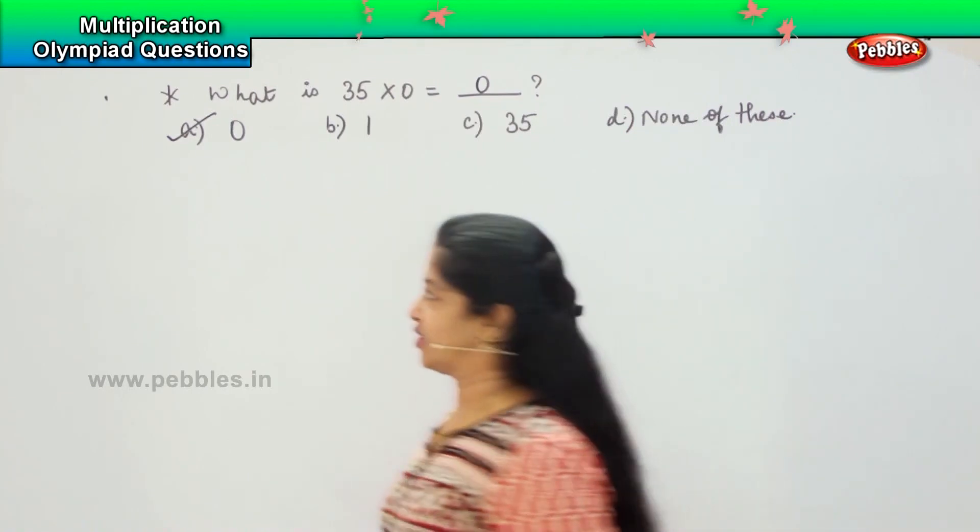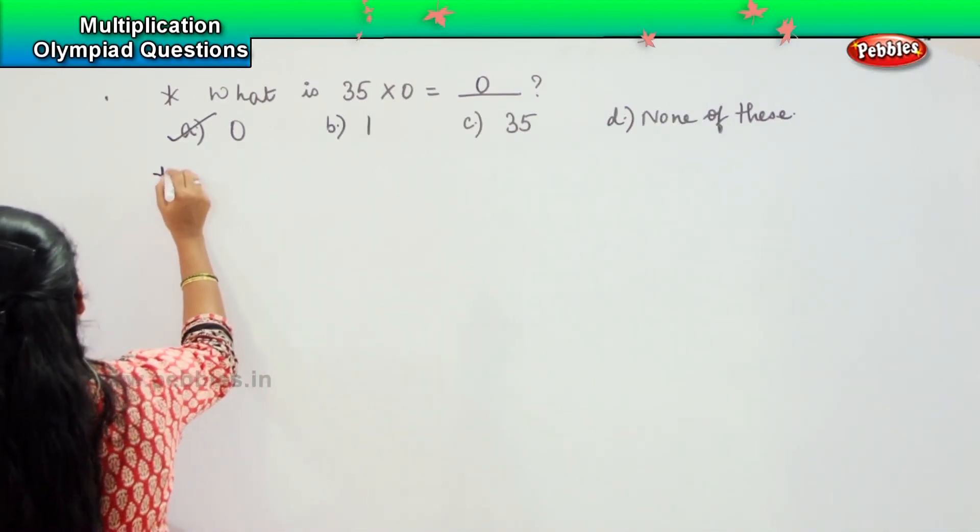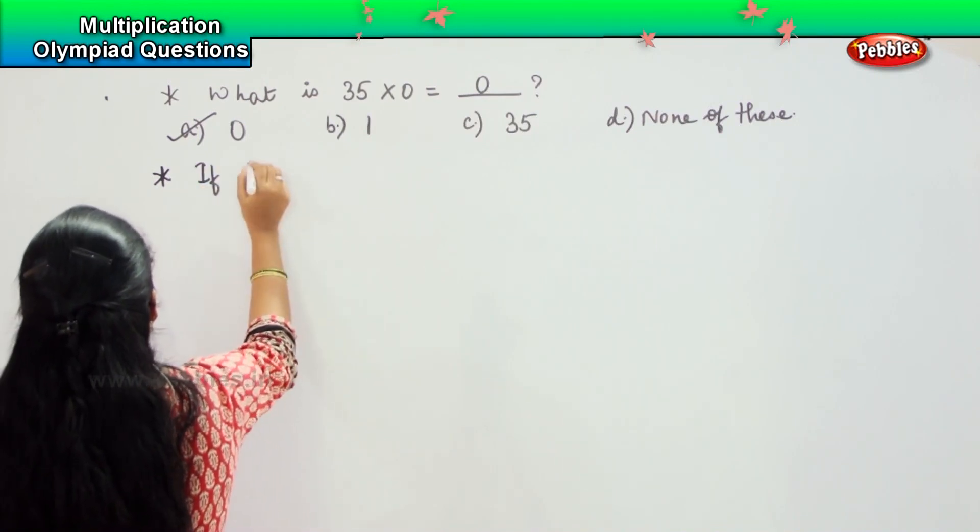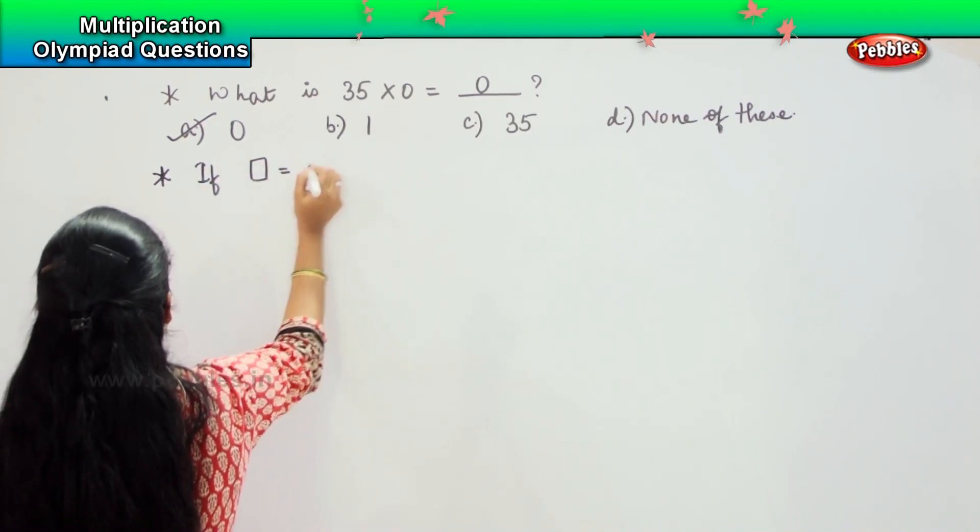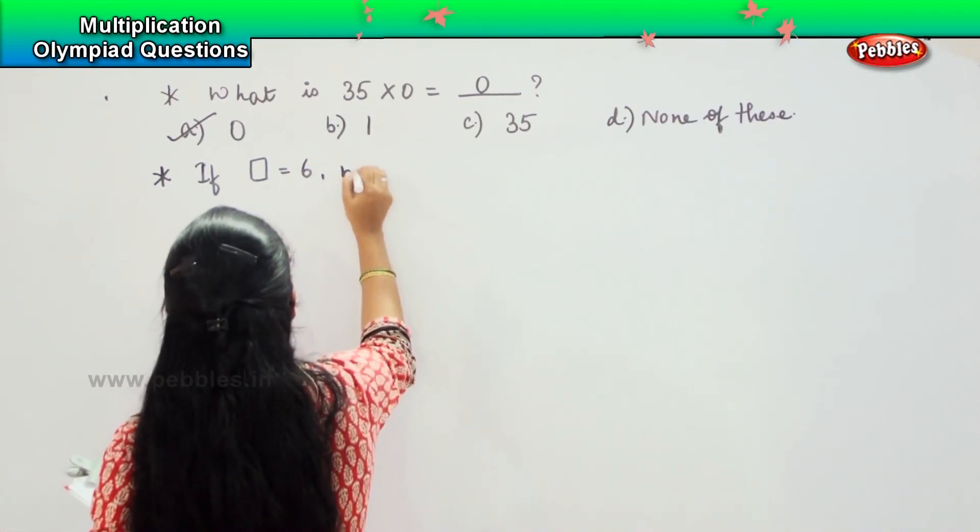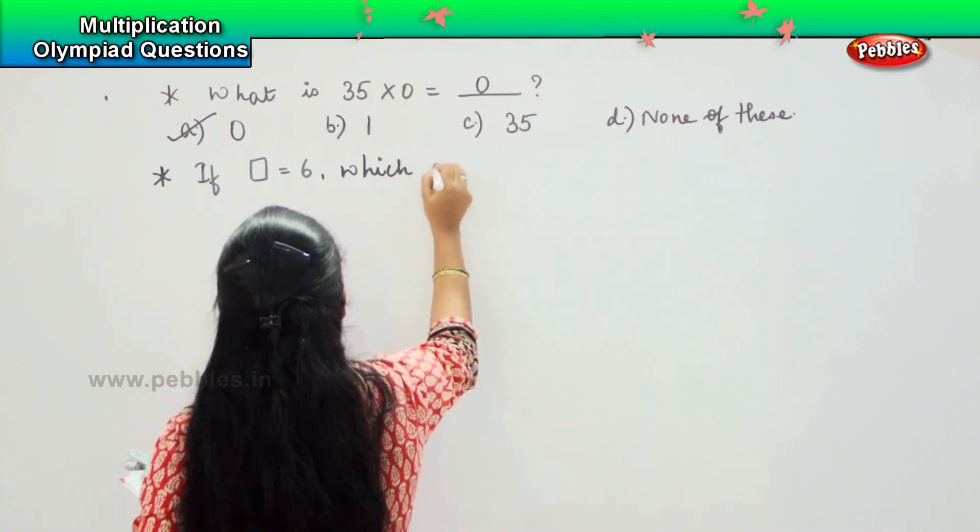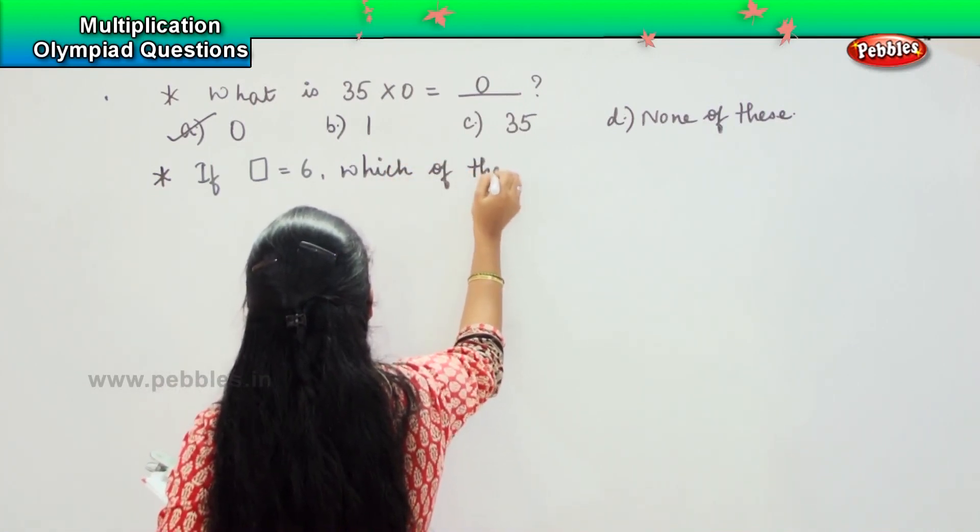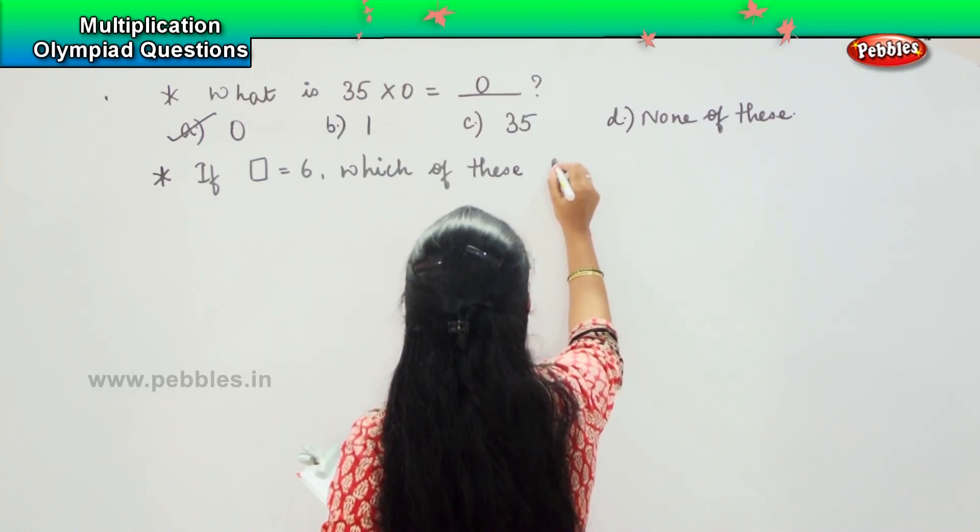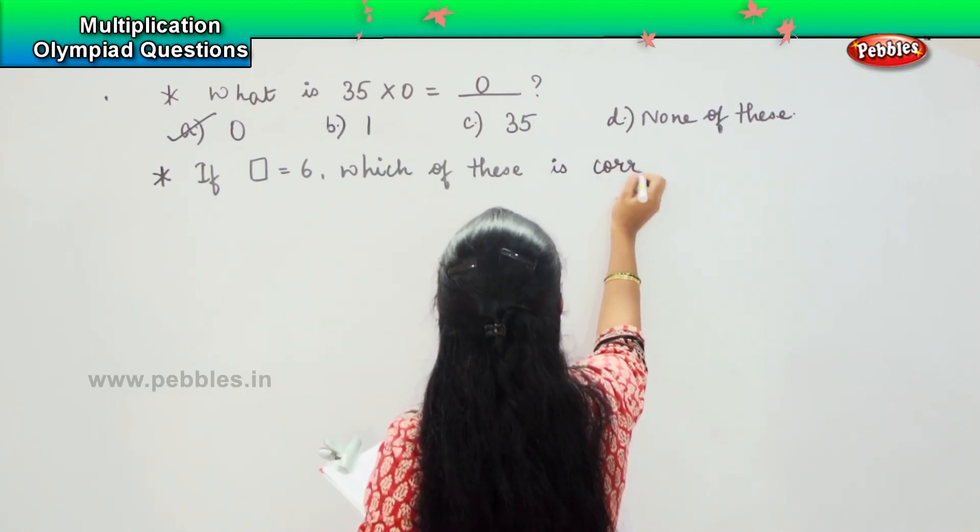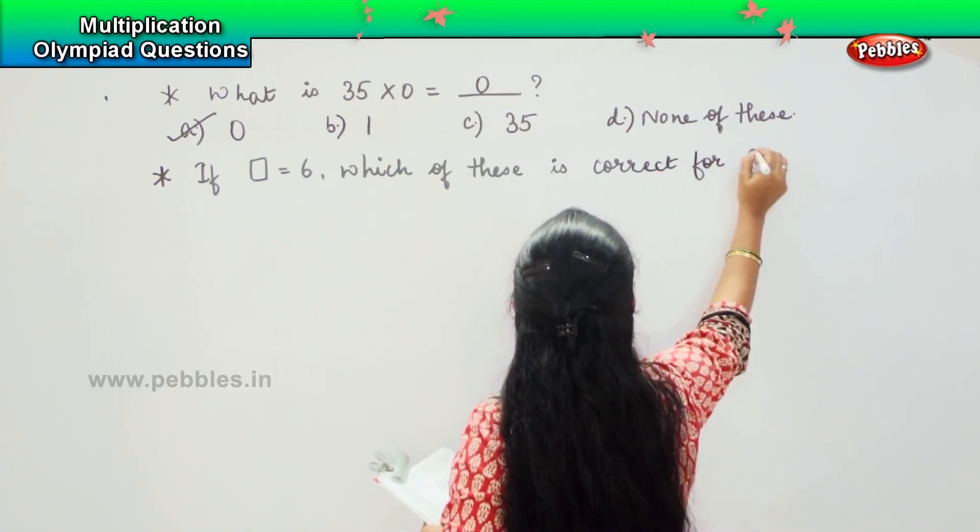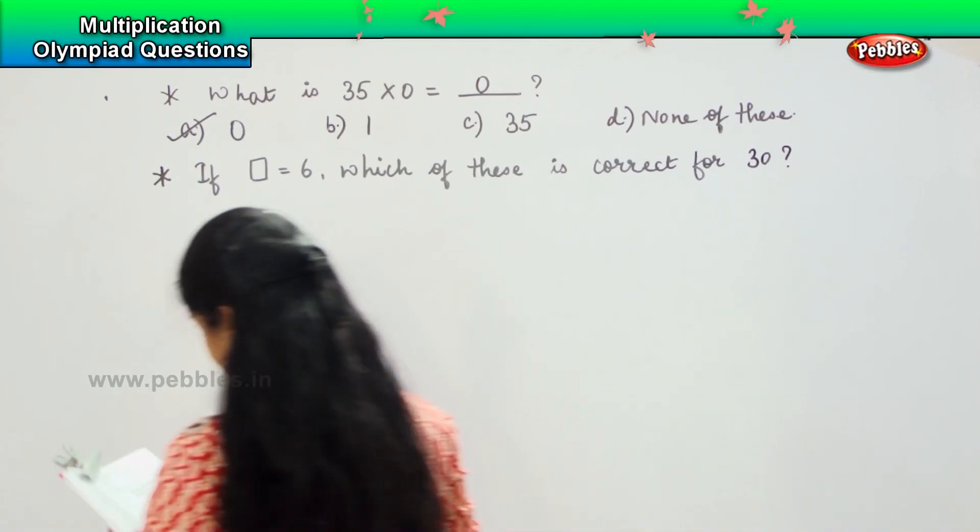Here is your next tricky question. Tell me how to solve this one. If a square denotes value 6, which of these is correct for 30?